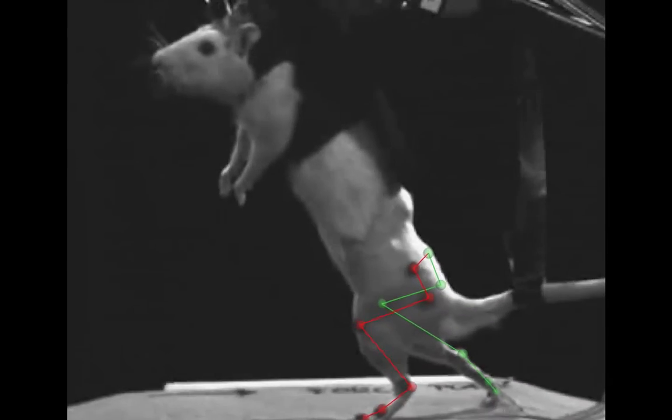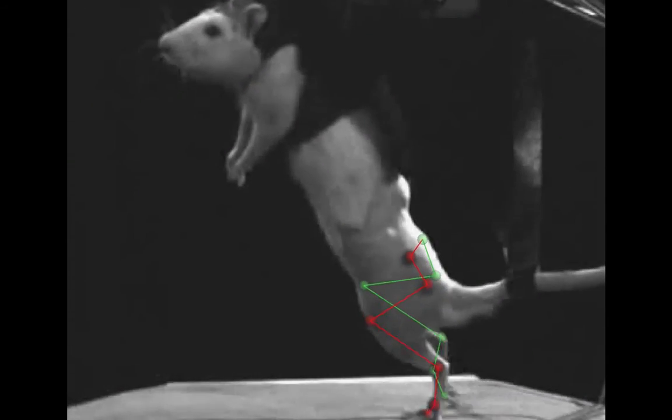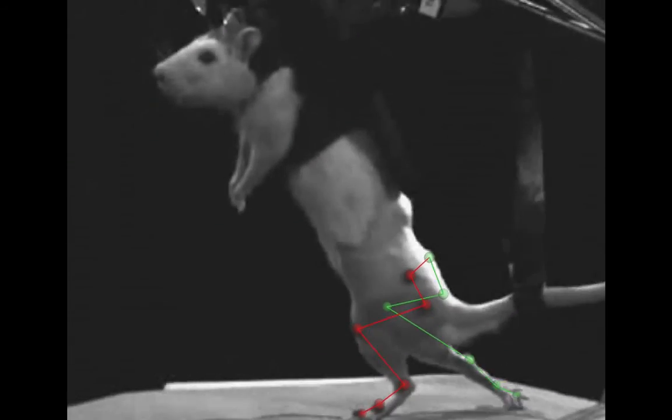The electrochemical neuroprosthesis restored continuous coordinated locomotion in the paralyzed rats.